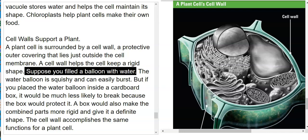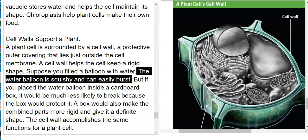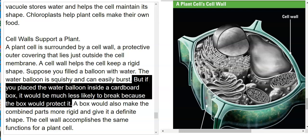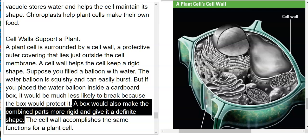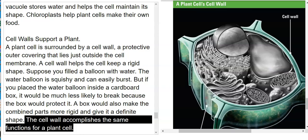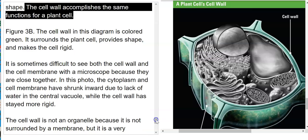Suppose you filled a balloon with water. The water balloon is squishy and can easily burst. But if you place the water balloon inside a cardboard box, it would be much less likely to break because the box would protect it. A box would also make the combined parts more rigid and give it a definite shape. The cell wall accomplishes the same functions for a plant cell.